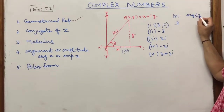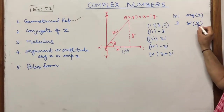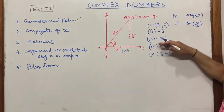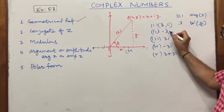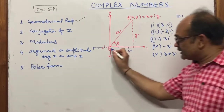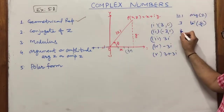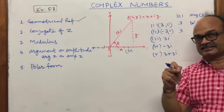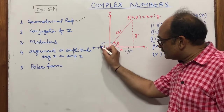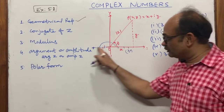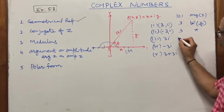The argument of z = 3 is tan⁻¹(0/3) = 0. For z = −3, plotted at (−3, 0), the modulus is √((−3)²) = 3. The angle for −3 is π (180°), since it lies on the negative x-axis.